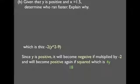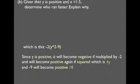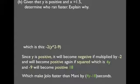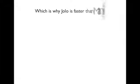Since y is positive, it will become negative if multiplied by negative 2, and will become positive again if squared, which is 4y. And negative 9 will become positive 81. Which makes Jolo faster than Mani by 4y-18 seconds. Which is why Jolo is faster than Mani.